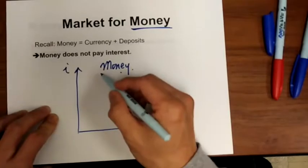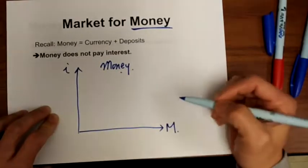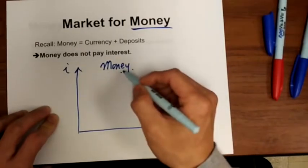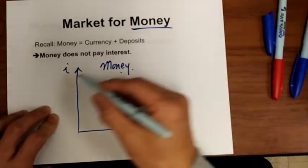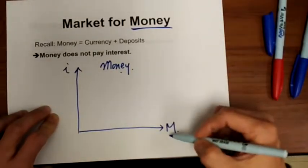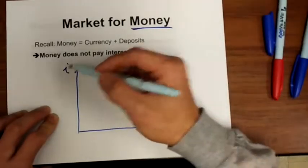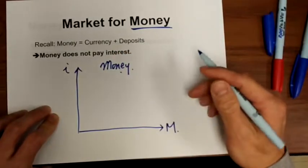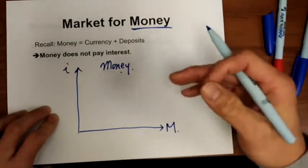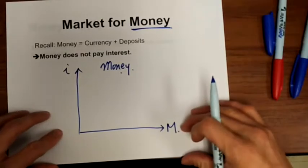If you want to borrow money, you pay interest rates. Therefore, the price of money is interest rates. So we've defined the variable on the x-axis and the variable on the y-axis. Now we want to draw the money demand curve and money supply curve. Let's draw the money supply curve first.